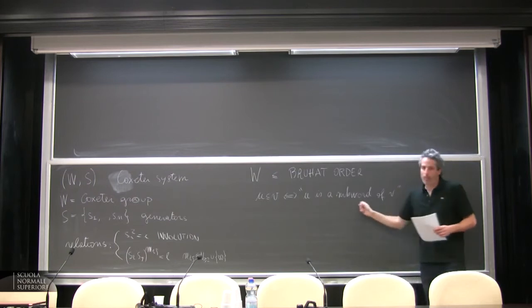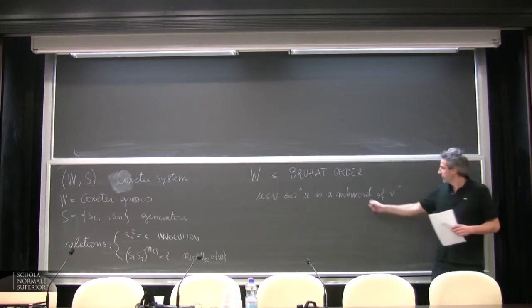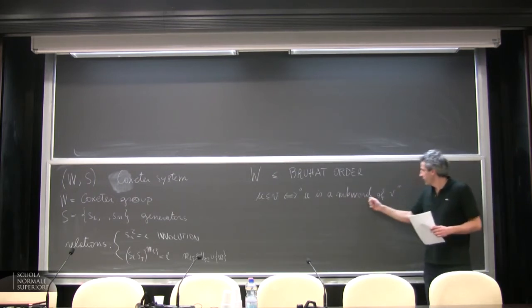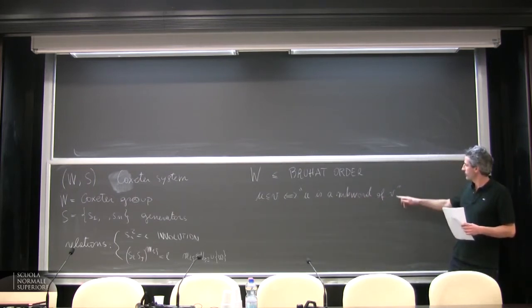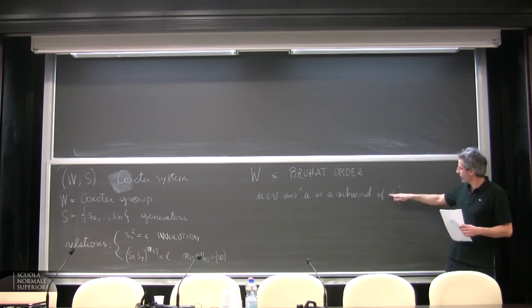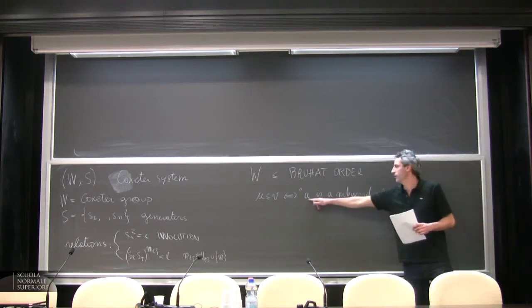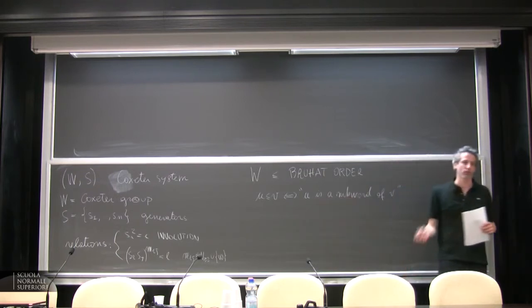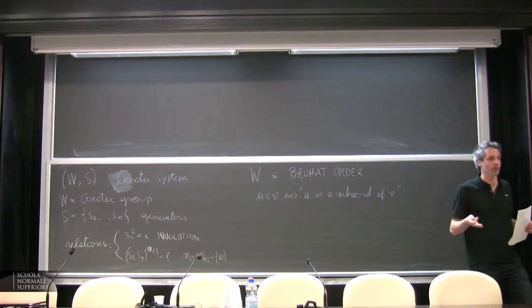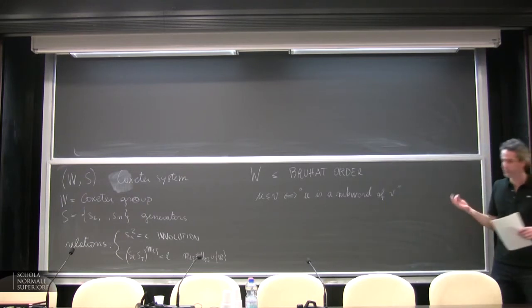I'm being a little bit sloppy here. This must be read as: for any reduced expression of V, there exists a reduced expression of U which is a sub-word of V.